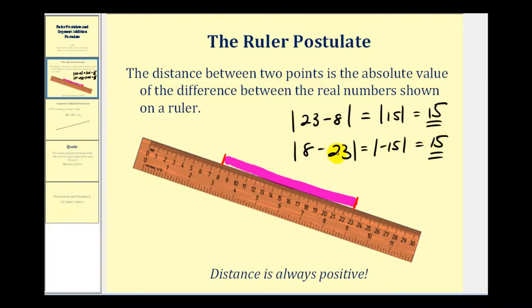So regardless of the order of the subtraction, because we're taking the absolute value, it will always be positive. And that's good because distance is always positive.